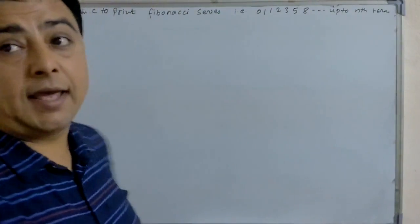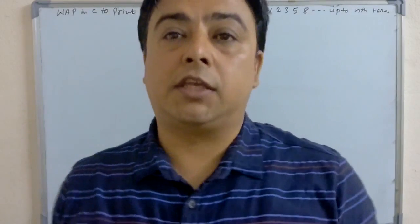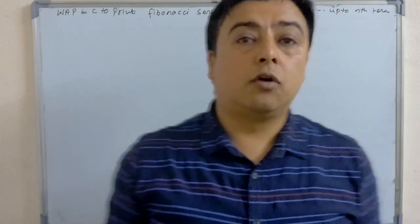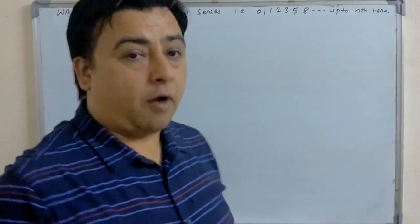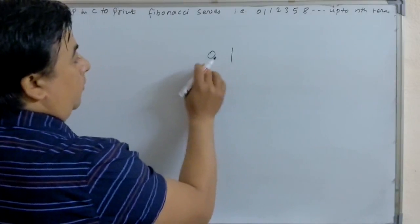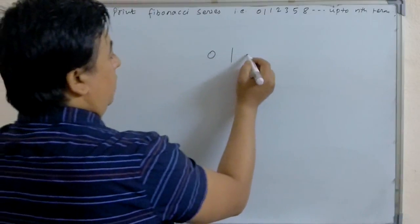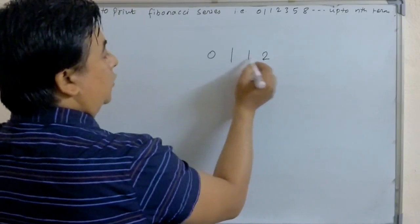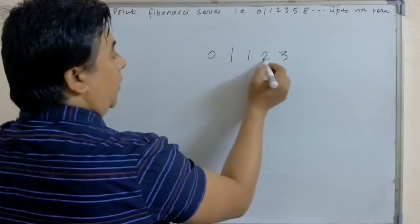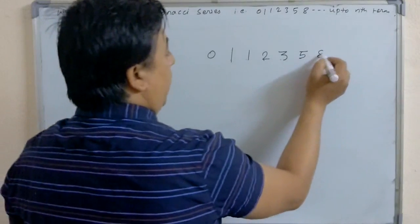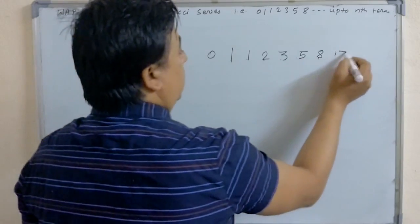The Fibonacci series consists of numbers in which each number is the sum of the two preceding numbers. For example: 0, 1, 0 plus 1 is 1, 1 plus 1 is 2, 2 plus 1 is 3, 3 plus 2 is 5, 5 plus 3 is 8, 8 plus 5 is 13.